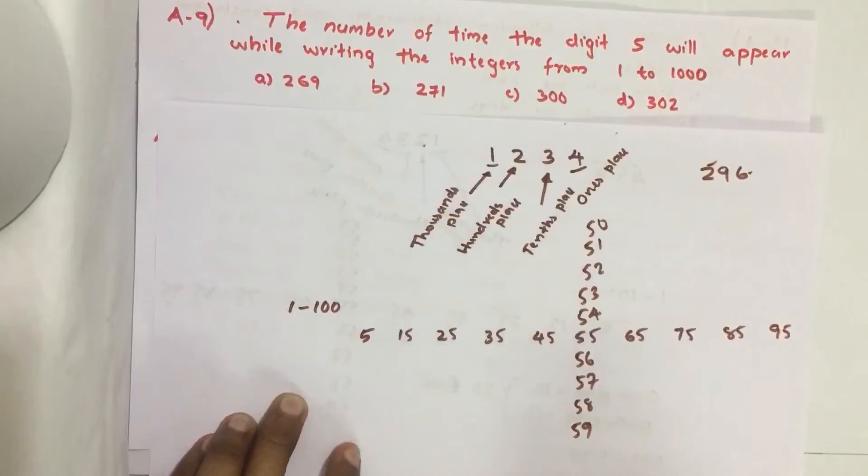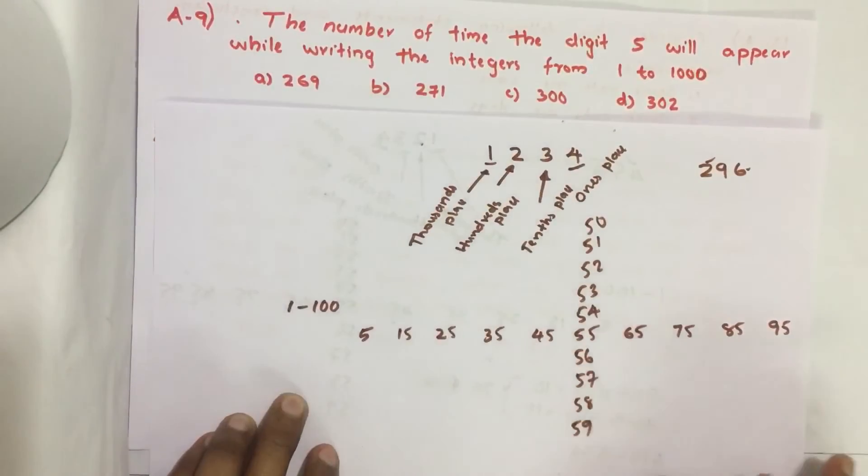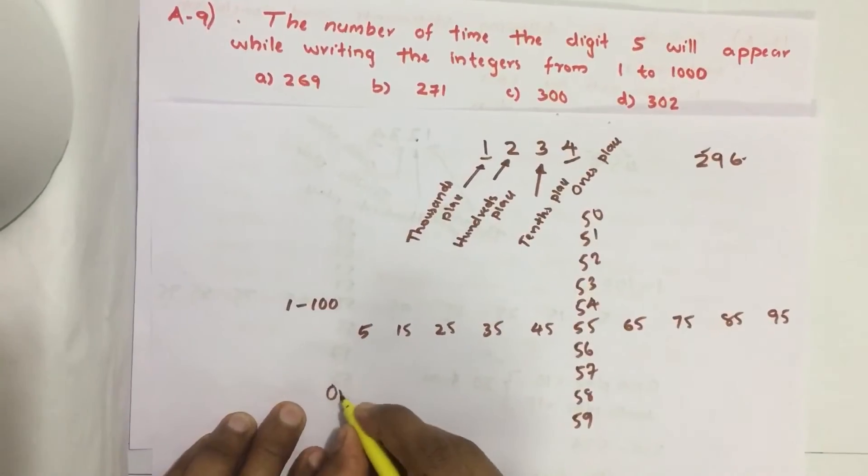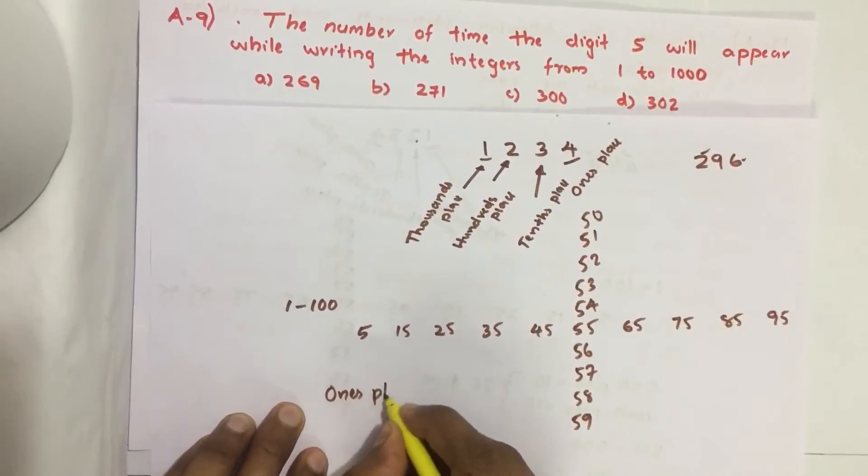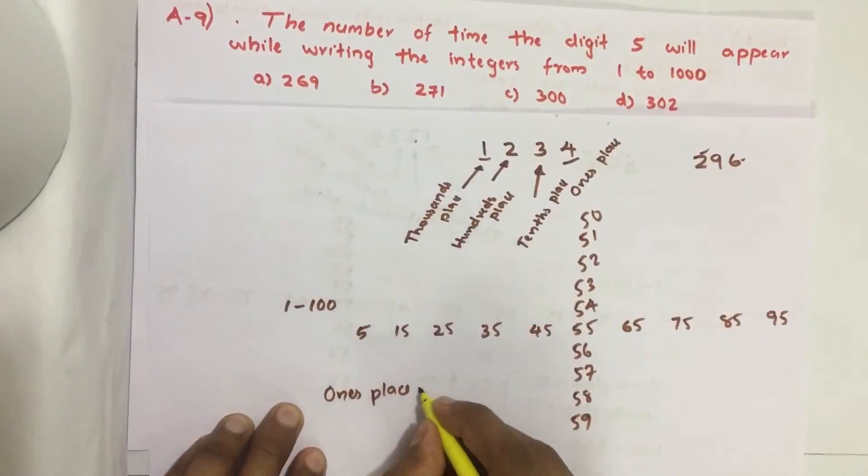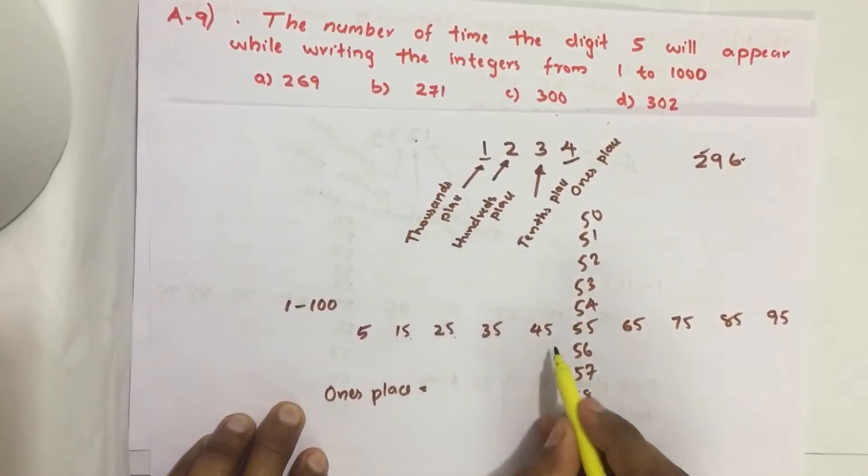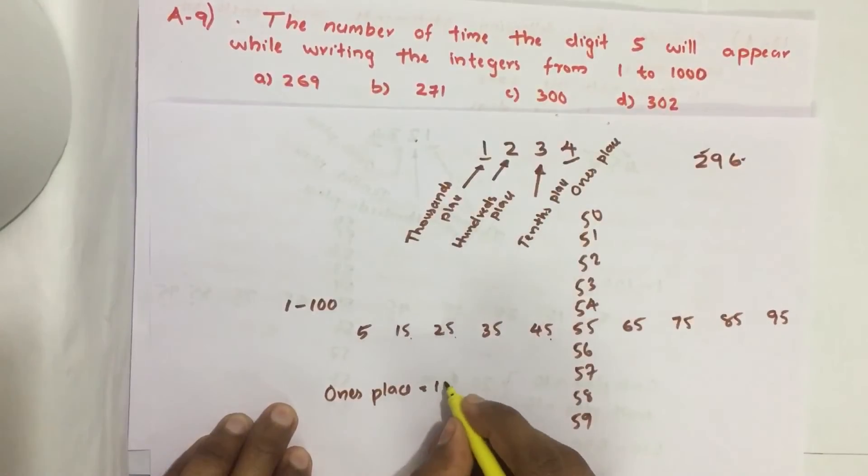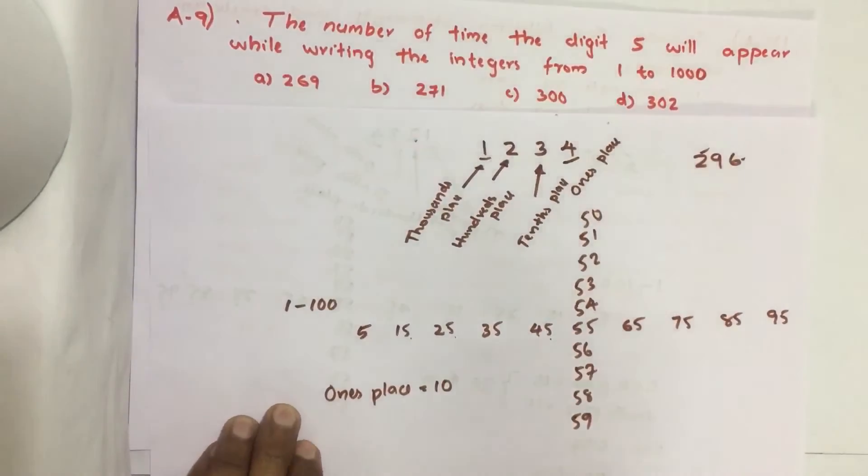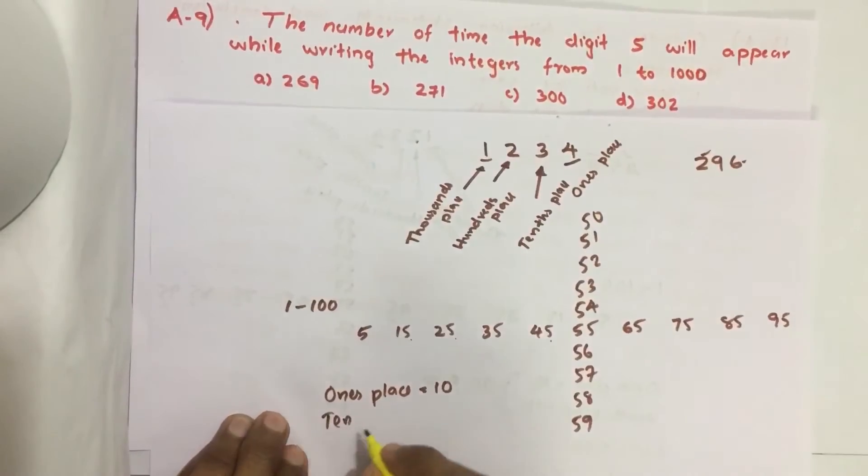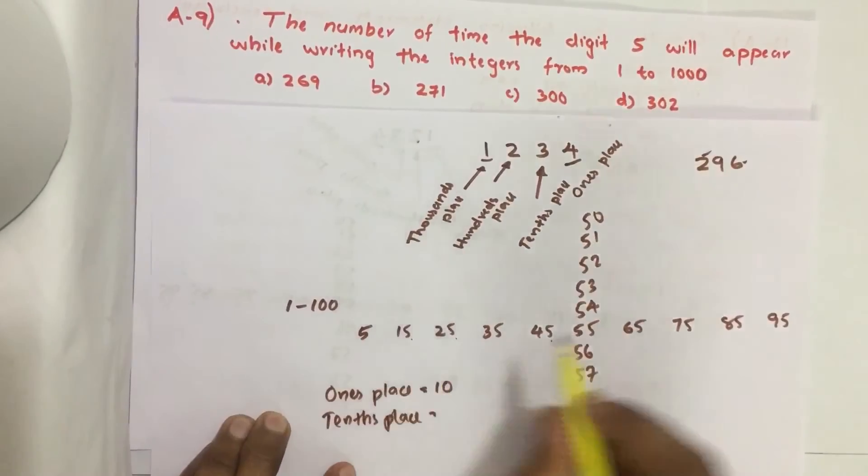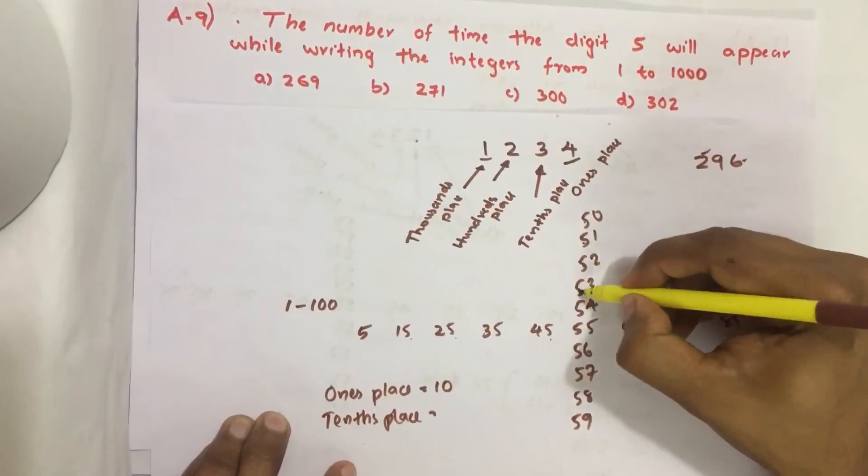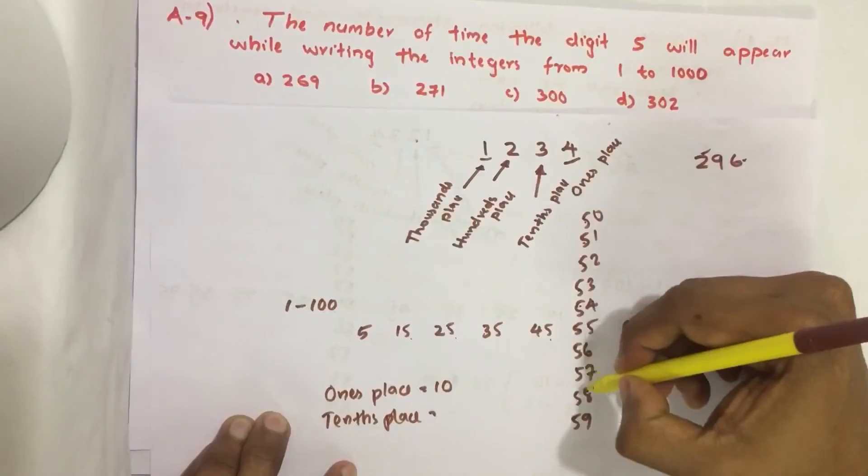Now we count how many digit 5's are there in 1 to 100. First we count 1's place: 1, 2, 3, 4, 5, 6, 7, 8, 9, 10. Ten digit 5's are there in 1's place. In 10's place: 1, 2, 3, 4, 5, 6, 7, 8, 9, 10.